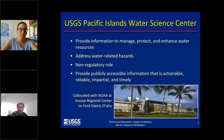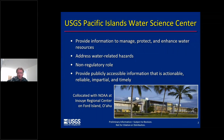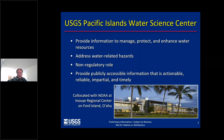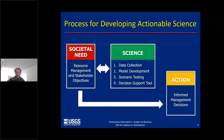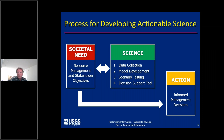Here at the Pacific Islands Water Science Center, our funding partners look to us to provide information needed to help manage, protect, and enhance water resources, and to address water-related hazards such as flooding. Unlike other federal agencies, USGS does not have a regulatory role. Most importantly, we strive to provide publicly accessible information that is actionable, reliable, impartial, and timely. Our process for developing actionable science begins with engaging resource managers and stakeholders to better understand their information needs and management objectives.